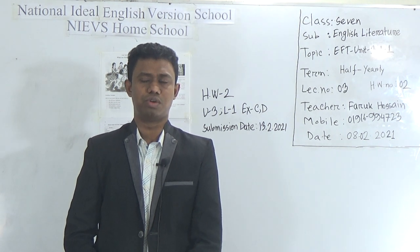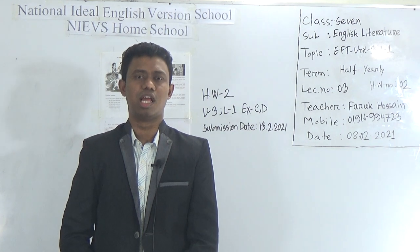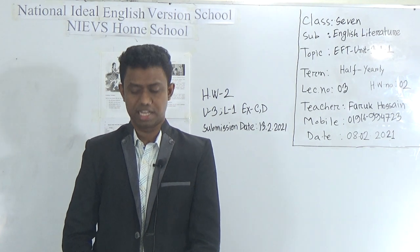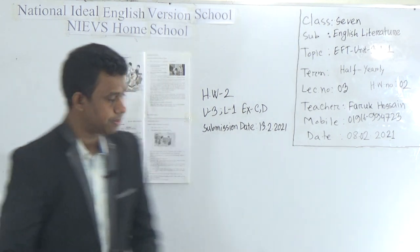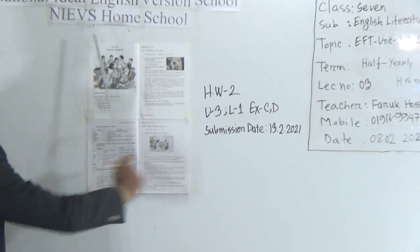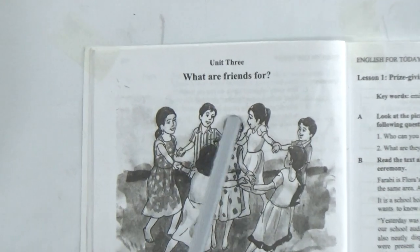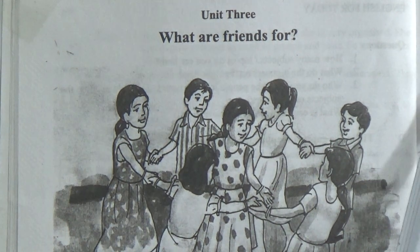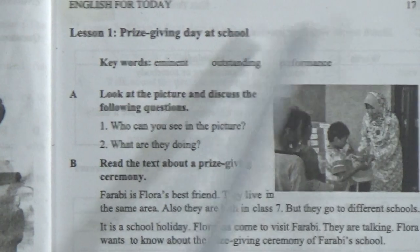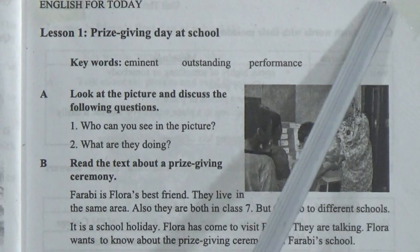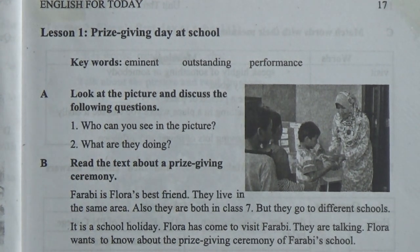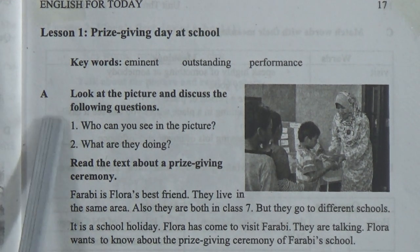Our today's topic is Unit 3, Lesson 1. This is your third class and it is your second homework. Task A: Look at the picture and discuss the following questions. The lesson title is 'Prize Giving Day at School,' page 17.